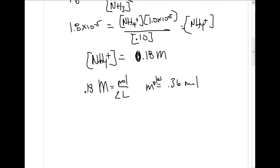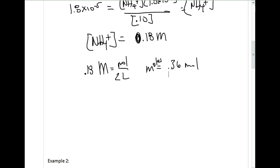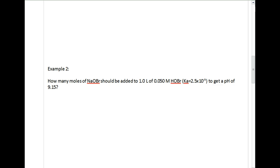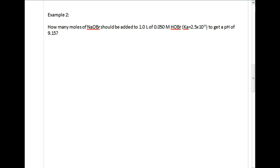That was an example of a weak base conjugate acid. Let's do one in the other direction, one with respect to a weak acid with the conjugate base HOBr. Again, we're looking for a specific pH, so we want to write our weak acid dissociation: HOBr into H+ plus OBr minus.